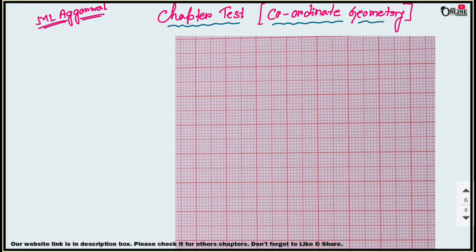In sum number four, draw the graph of the equation 3x minus 4y equal to 12. From the graph, find the value of y when x equals minus 4, and the value of x when y equals 3. So first, you have to draw the line 3x minus 4y equal to 12.